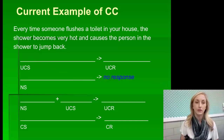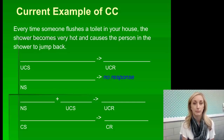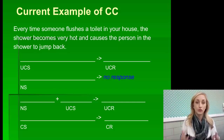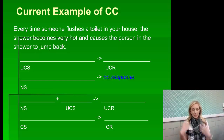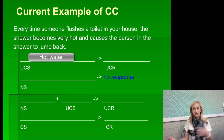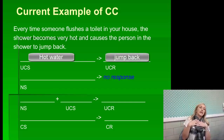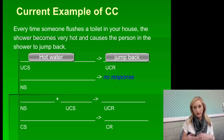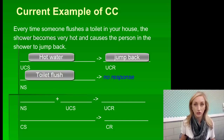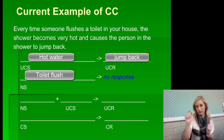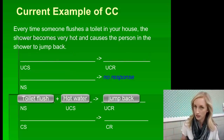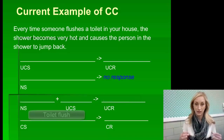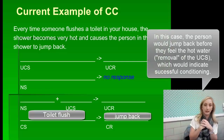Here's another example to fill in on your own. Every time someone flushes a toilet in your house, the shower becomes very hot, causing the person in the shower to jump back. Eventually, every time the toilet flushes, the person will jump back from the water. What naturally makes someone jump back? That's the unconditioned stimulus — the hot water. The unconditioned response is jumping back. The neutral stimulus that does not initially create a response is the flushing of the toilet. The conditioned stimulus is the toilet flushing, and the conditioned response is jumping back in the shower.